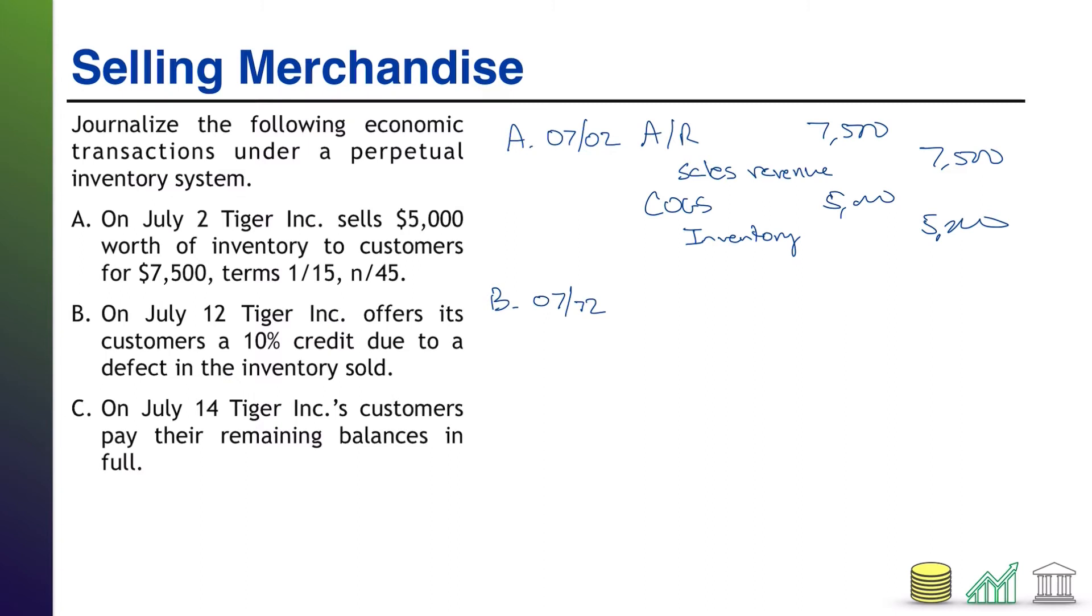Rather, we'd rather them keep the defective inventory. We'll just give them a break on the cost. So, 10% credit, that 10% comes off of the selling price. In this case, 10% of $7,500 is going to be $750.